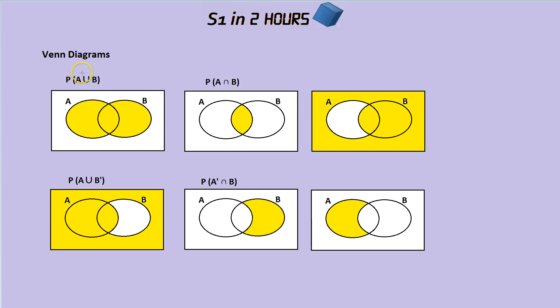Venn diagrams are all about understanding this U shape and this N shape here. P stands for probability, and the bracket shows the probability of the thing happening inside the brackets. The U means or.